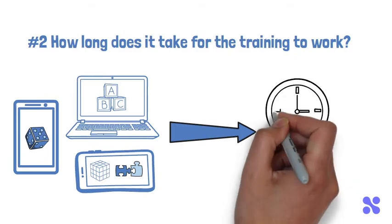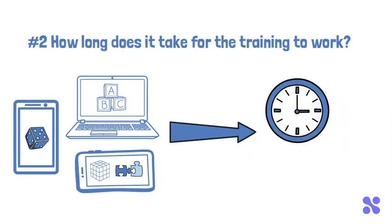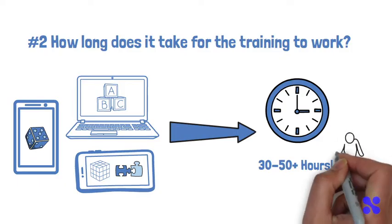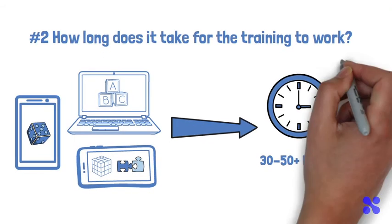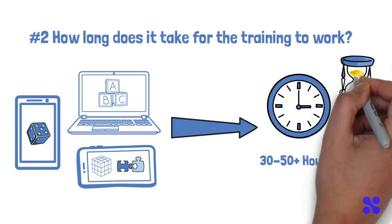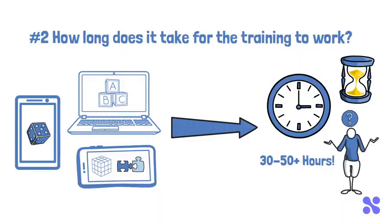Studies generally show that it can take upwards of 30 to 50 hours of distributed training to see benefits. And even then, they can be modest or negligible. Before you begin a training program, look for information on how long you can expect before you begin to see results.